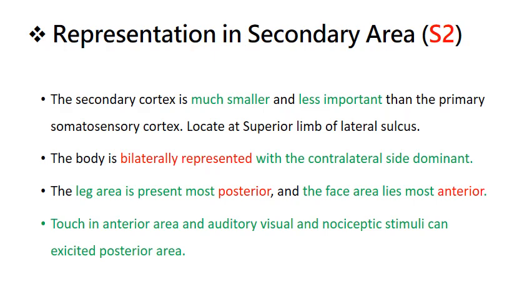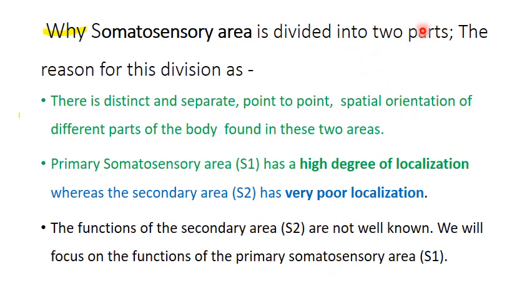The secondary cortex is smaller and less important. It is located at the superior limb of the lateral fissure. It represents bilaterally, but the contralateral side remains dominant. The leg area is the most posterior and the face area is the most anterior. S1 is for a high degree of localization, while S2 is for very poor localization.